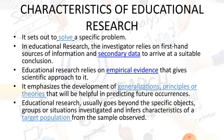Now the characteristics of educational research: it sets out to solve a specific problem. In educational research, the investigator relies on first-hand sources of information and secondary data to arrive at a suitable conclusion — we use primary as well as secondary data. Educational research relies on empirical evidence that gives a scientific approach to it. Empirical means based on experience or some sort of experiment.